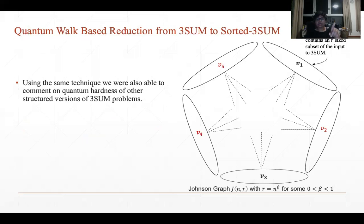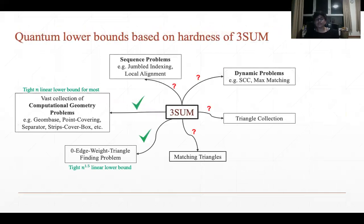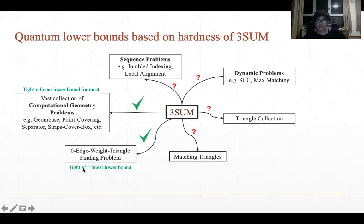Using the same technique, we are also able to comment on the quantum hardness of other structured versions of 3SUM problems — not just sorted 3SUM, but a slightly more general version of this sorted 3SUM property. Because of our proof strategy, we are now able to port the classical reductions from 3SUM to zero edge weight triangle finding, and to quantize the classical reductions from 3SUM to a vast collection of computational geometry problems. As a result, we are able to prove a tight linear lower bound — conditional, but tight — for the zero edge weight triangle finding problem. We also prove a linear lower bound for a list of computational geometry problems, for most of which the bound is tight, though there are some open problems where the bounds are not yet closed.